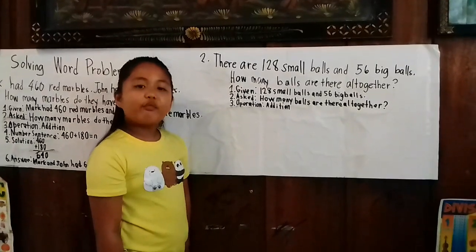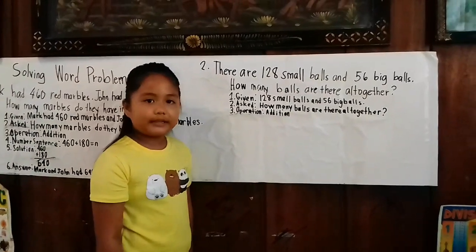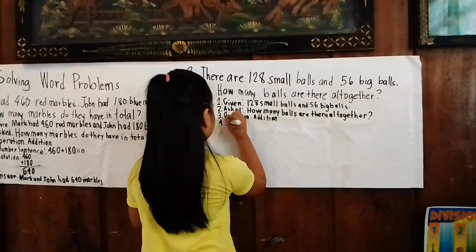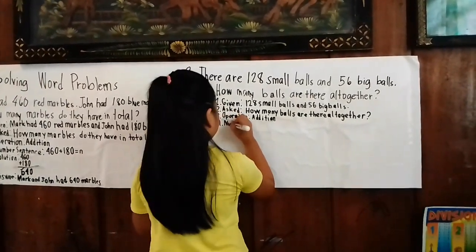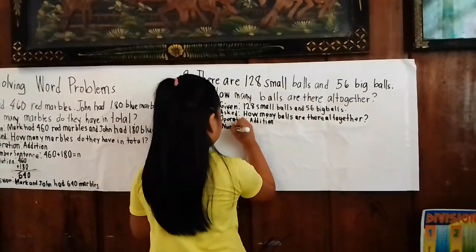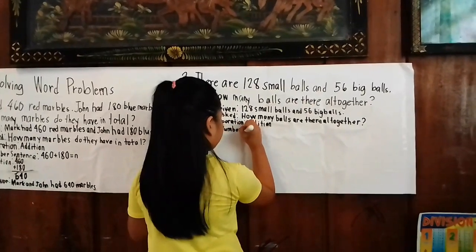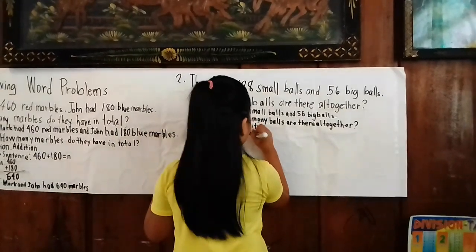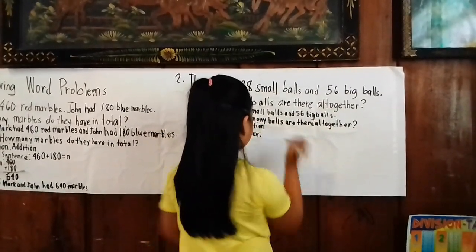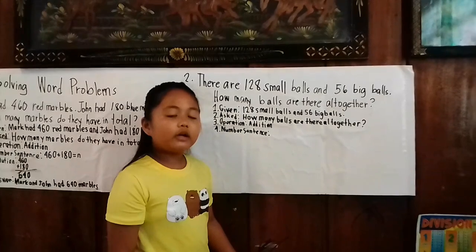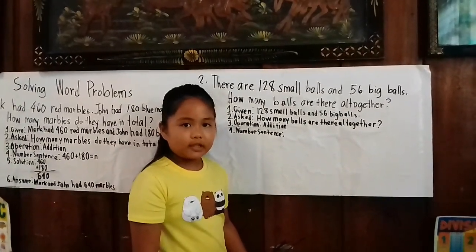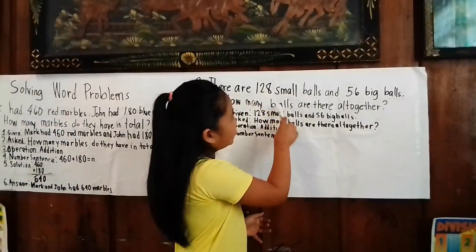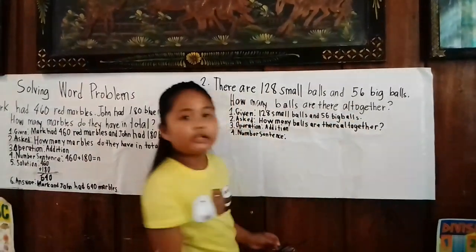The step four is the number sentence. What will we write in the number sentence? We will write: 128 plus 56 equals N.